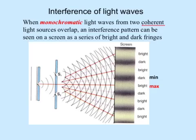Now, let's look at interference of light waves. When monochromatic light waves—which means light of one color or one frequency—from two coherent or consistent light sources overlap and interfere, an interference pattern can be seen on a screen. Here's a screen showing a series of bright and dark fringes. You can see that.